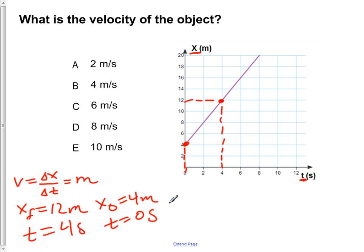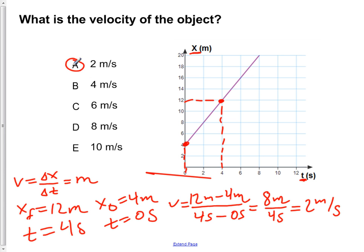Now if we calculate our velocity, we need the change in position, which is 12 meters minus 4 meters, over the change in time, which is 4 seconds minus 0 seconds. This gives us 8 meters over 4 seconds, giving us a velocity of 2 meters per second. So our answer is A.